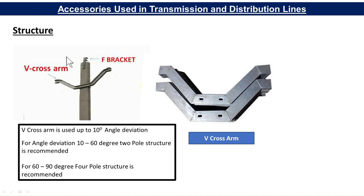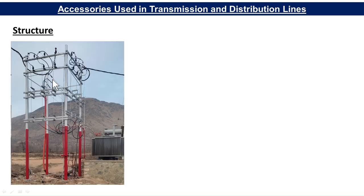Now looking at distribution structure types: V cross arms and F brackets are used for distribution. V cross arms are used up to 10-degree angle deviation of the line. For angle deviation from 10 to 60 degrees, a two-pole structure is recommended. For 60 to 90 degrees, a four-pole structure is recommended — four poles at four corners are used. Here you can see the line coming from one side and going at a 90-degree angle deviation.